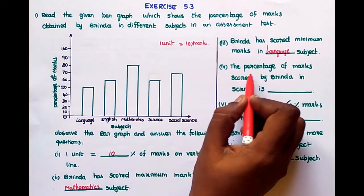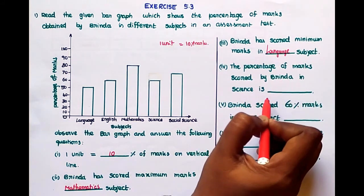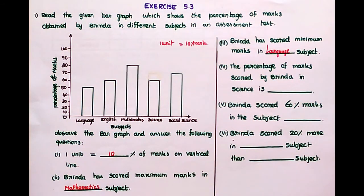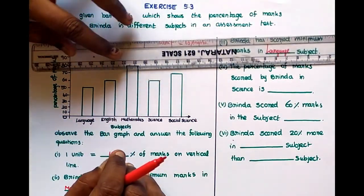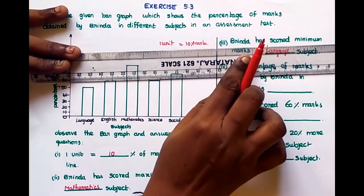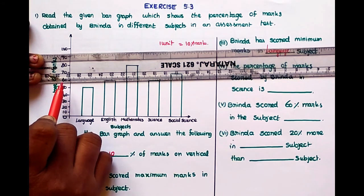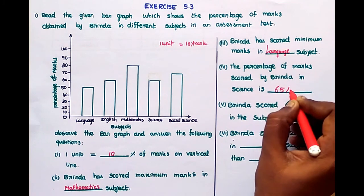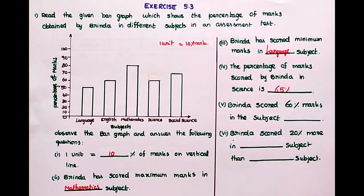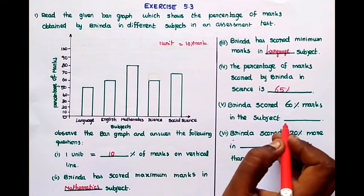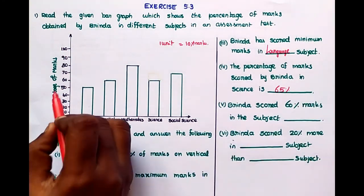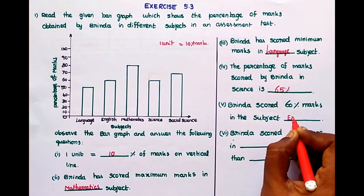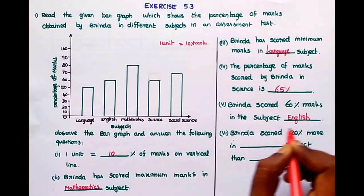Next, the percentage of marks scored by Vrinda in science is dash. Science how much? That is in between 50 and 60, that is 65. Then Vrinda scored 60 marks in the subject English.